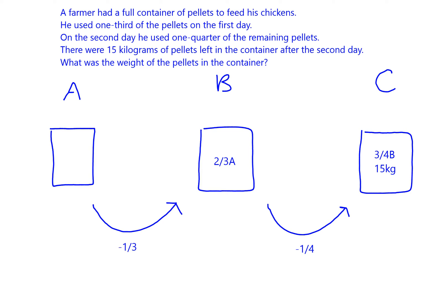This diagram illustrates everything that we know based on the question. We start off with a certain weight of pellets in a full container, we take one third away from that which leaves us with two thirds of what we started. I've called the containers A, B and C by the way. B represents the end of the first day, where we have two thirds left of what we started with over here.